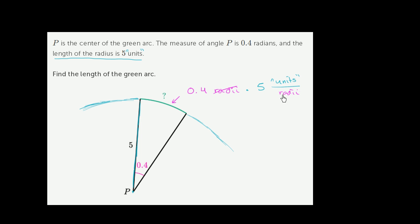So the radii cancel out, we're left with just the units, which is what we want, so 0.4 times five is two. So this is going to give us two.